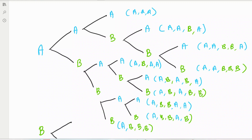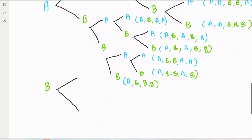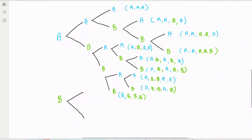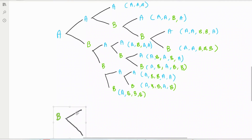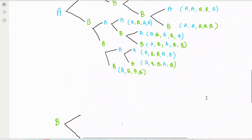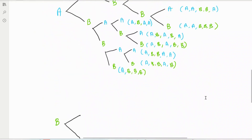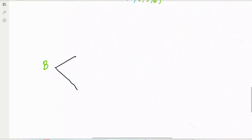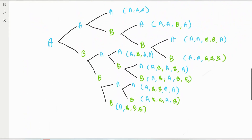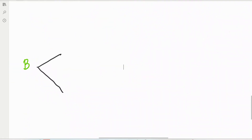We are not done yet — we still need to do all the branches where B wins the first set. So now we start with B winning first. Same logic applies. B wins, then A or B can win the next set.